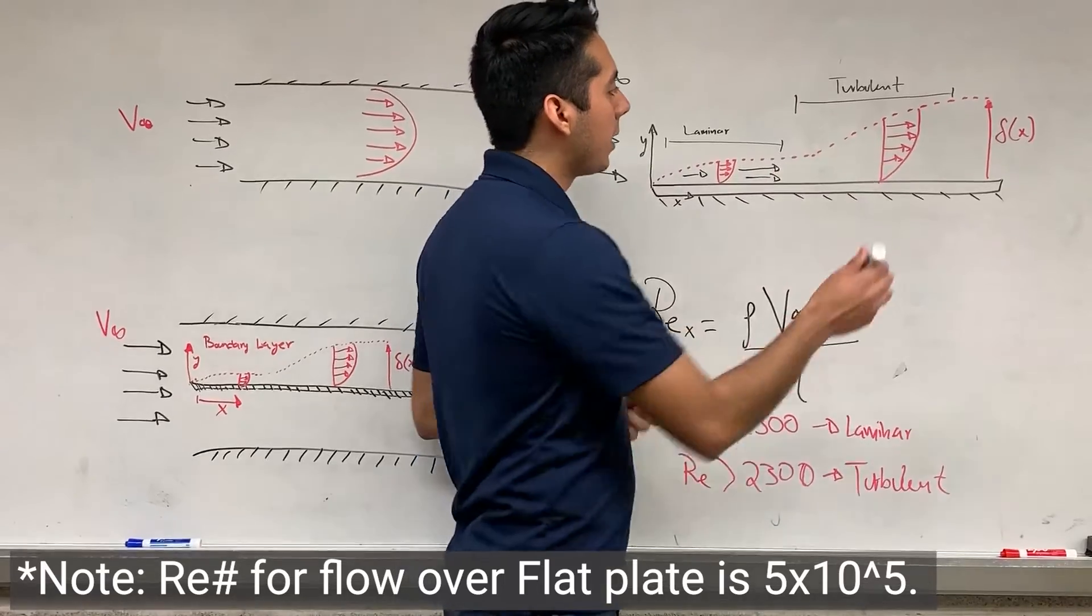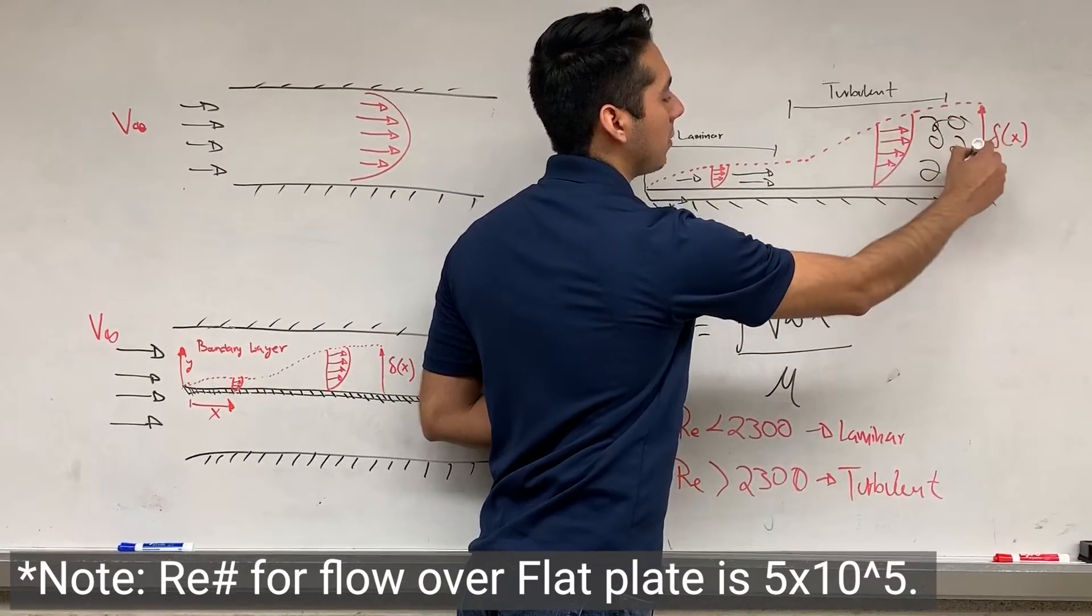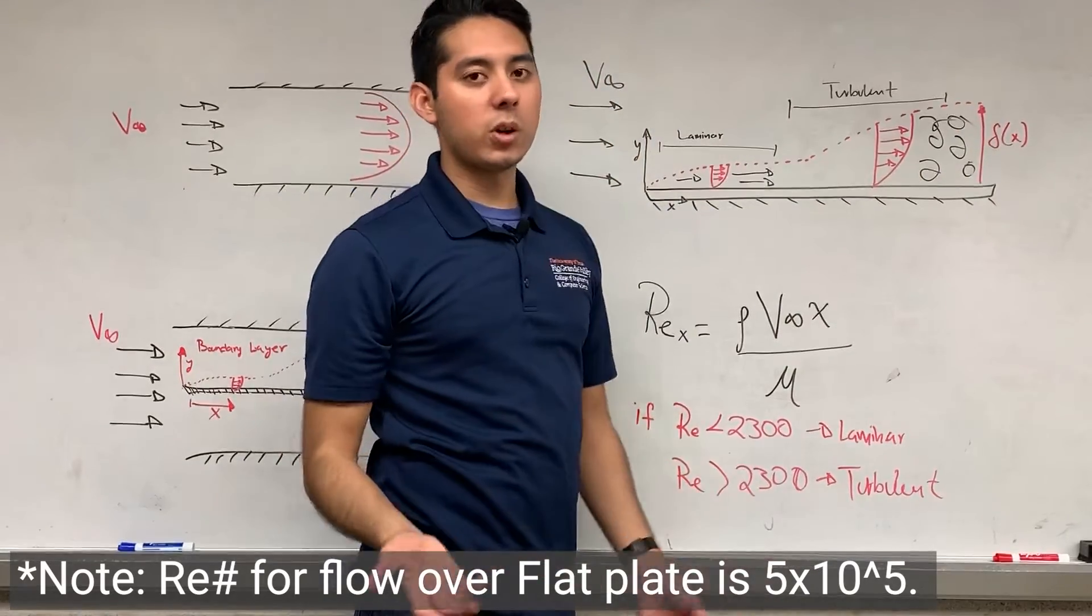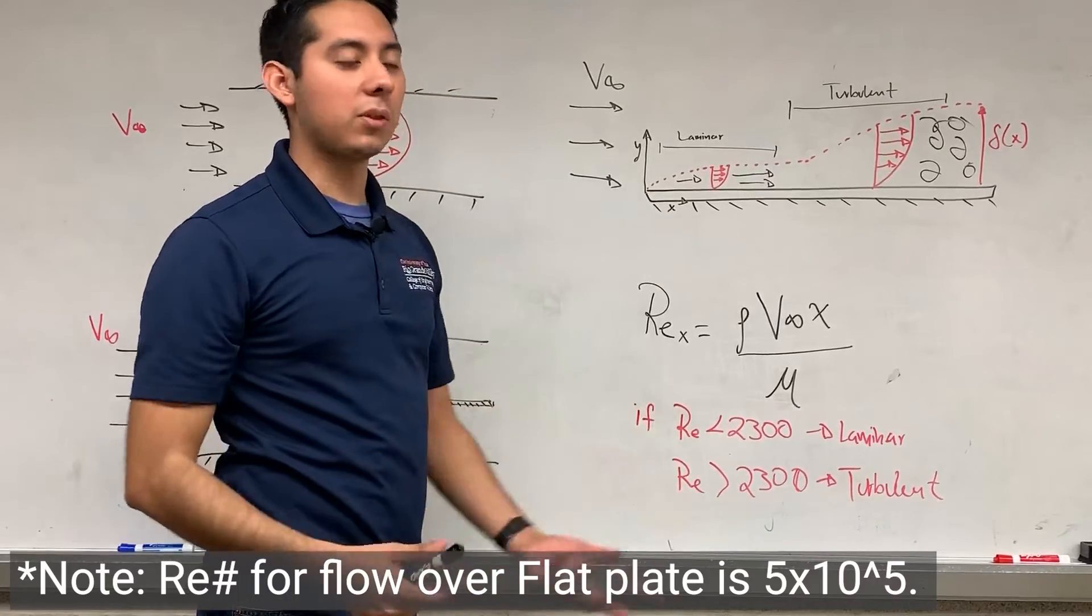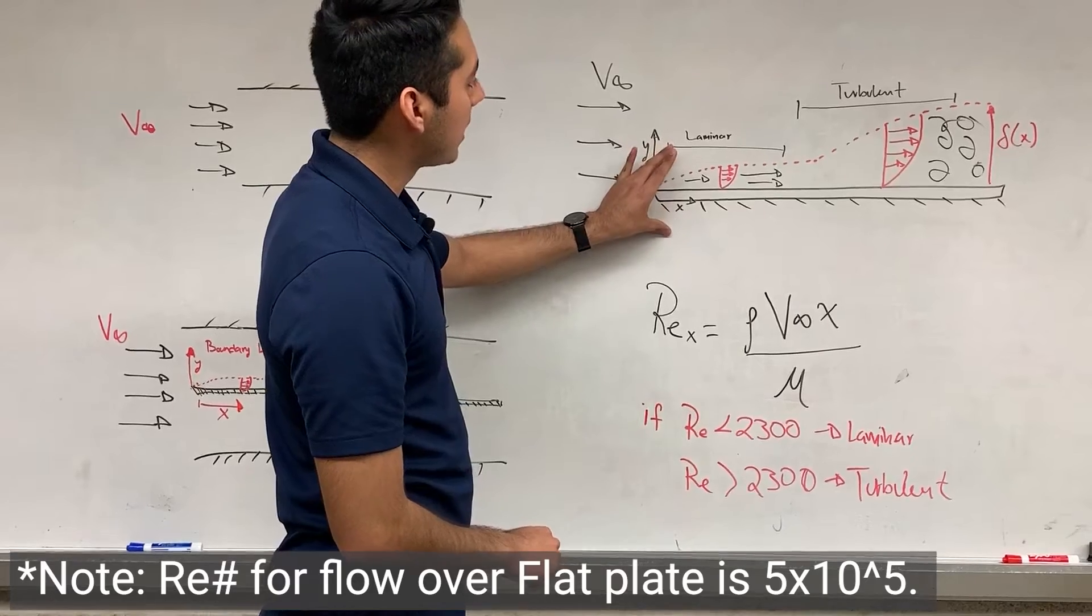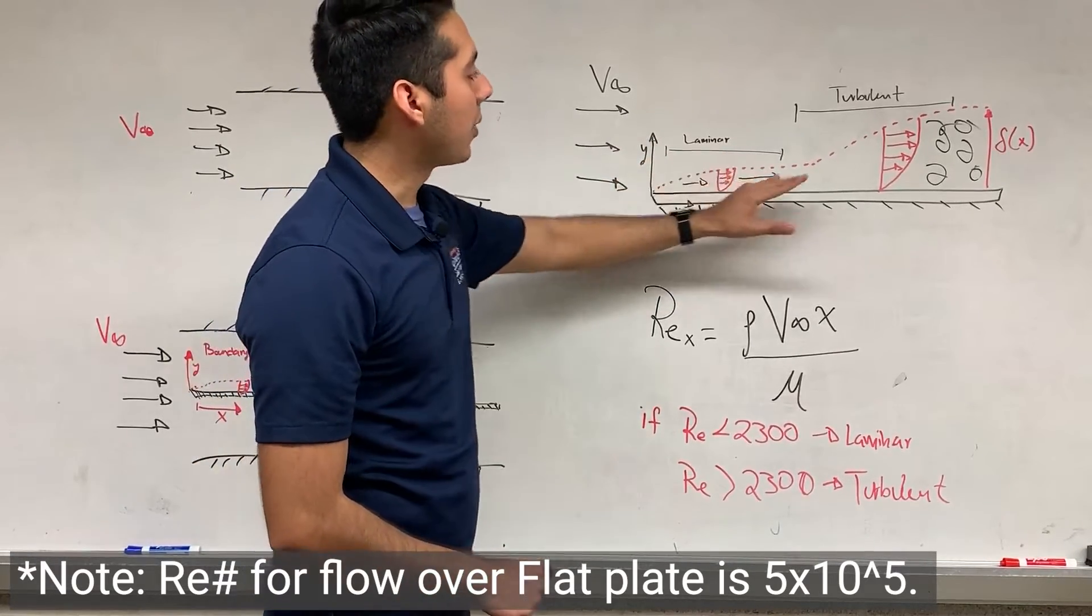But once we get to the turbulent part, all the fluid is just moving around randomly, and there's some shakes and bumps. Just like when we're on a plane, we hear the word turbulence. You can see that it's not a smooth flow. So as we said, really close to the surface, the viscosity of the fluid will play an effect on the way the velocity is shaped.